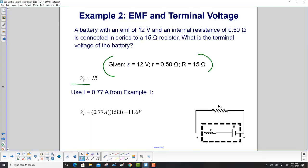From Example 1, we found that the current is 0.77 amps. We use our terminal voltage formula, which is I times R—this resistance here—and we're measuring between the two terminals of the battery. So it's 0.77 amps times 15 ohms, which equals 11.6 volts.